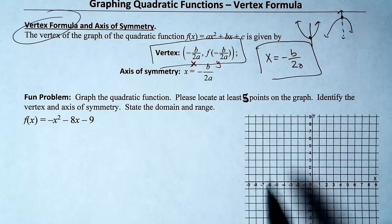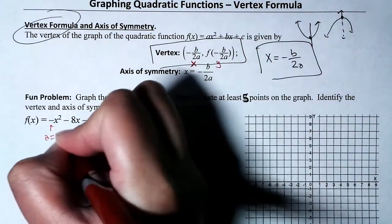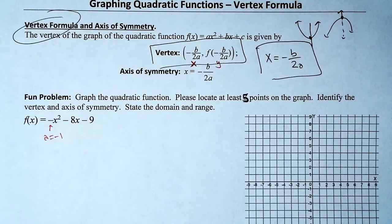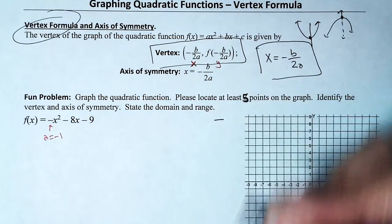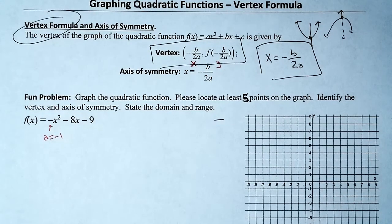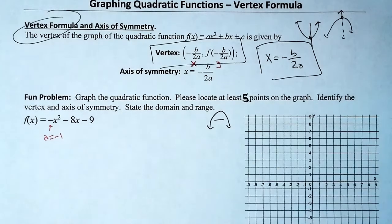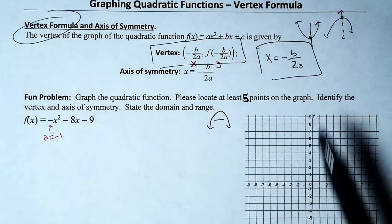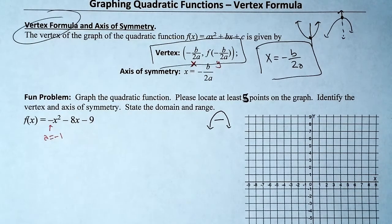First, it's nice to know if the parabola opens up or down. To determine that, we identify the leading coefficient — the value of a. Here, a is negative one. If the leading coefficient is negative, the parabola opens down. So our graph should be opening down; if not, we check our arithmetic.